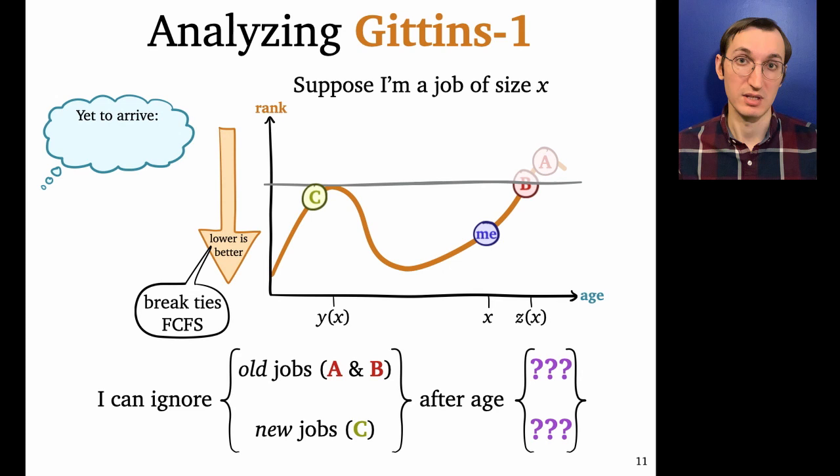Okay, so let's start with the old jobs. When could I ignore jobs A and B? I could ignore them when they crossed the gray line, which happens after age Z of X. Cool. How about new jobs? Well, new jobs, because I win the first come first serve tiebreaker, they don't have to cross the gray line, they just have to touch it. And once they touch it, I can ignore them for the rest of my time in the system. And so the new jobs will touch the gray line after age Y of X.